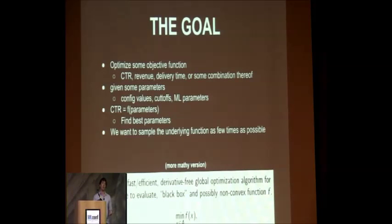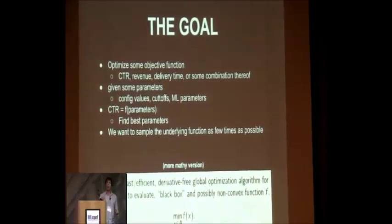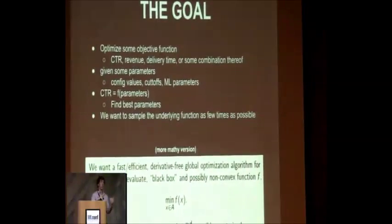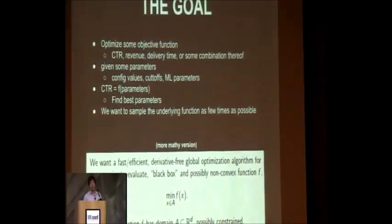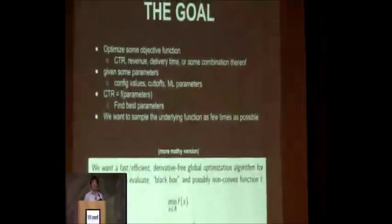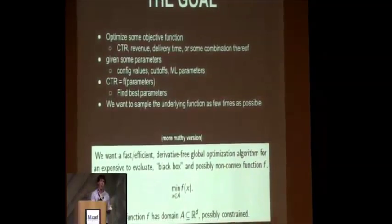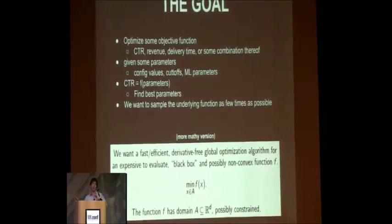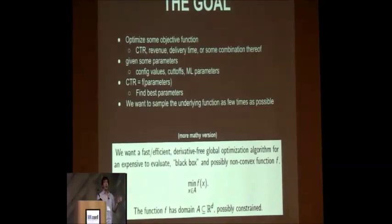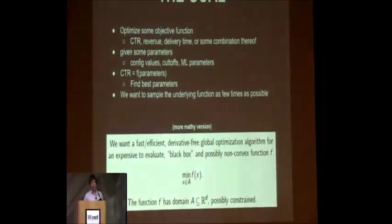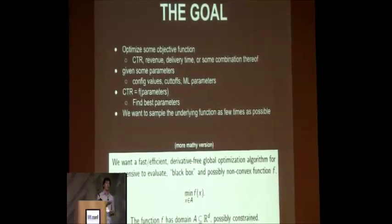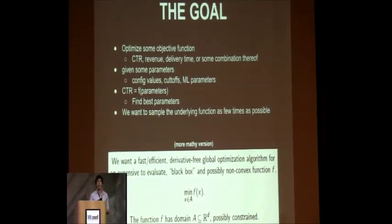The goal of global optimization is similar to a hyperparameter search — we're trying to find the best hyperparameters or parameters for some function in as few samples as possible. We have some objective function — click-through rate, revenue, log loss, whatever it may be — and some parameters of our system: config values, thresholds, cutoffs, hyperparameters to your models. We imagine the whole system as just a function that wraps these parameters and spits out an overall evaluation criterion. We want to sample this underlying function as few times as possible, because maybe every time we sample it we need to run a two-week A-B test or 100,000 cores.